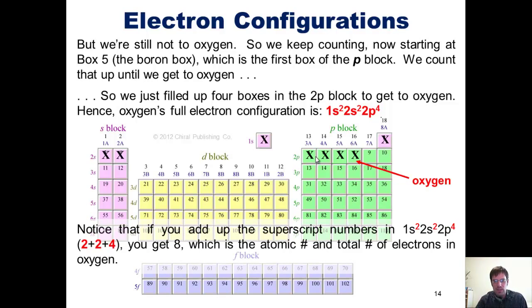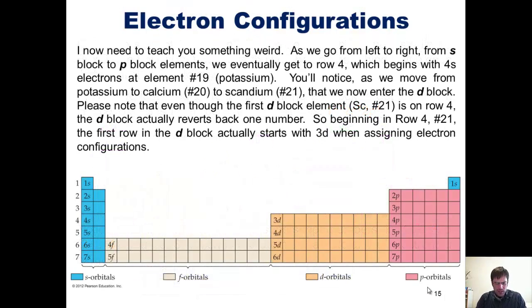Hence, oxygen's full electron configuration is 1s2, that's for these two in the 1s row, 2s2, that's for these two in the 2s row, and 2p4, that's for these four in the 2p row, going all the way up to oxygen. Notice that if you add up the superscript numbers in 1s2, 2s2, 2p4, these red numbers, 2 plus 2 plus 4, you get 8, which is also the atomic number and total number of electrons in oxygen.